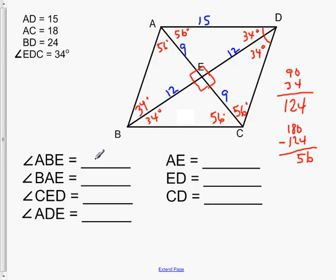So we have all the angles. Let's go through and answer these four questions then. It says angle ABE, well that's 34, so 34 degrees.